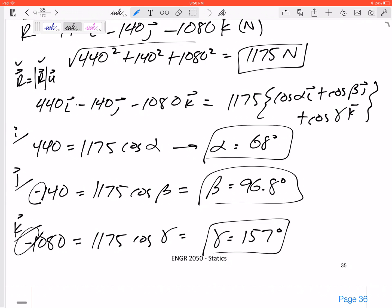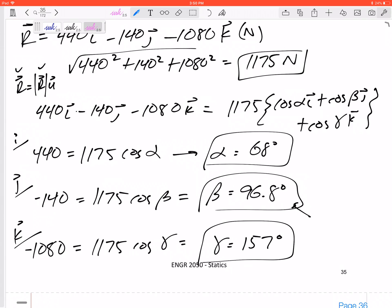Check that those make sense. My negative components gave me angles that were greater than 90 degrees. This angle is kind of close to 90 degrees because it was the smallest. The largest one is pretty far away from 90 degrees. So there's just a few things you can check to make sure your answer makes sense.